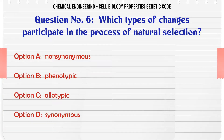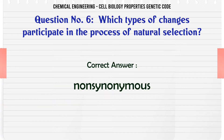Which types of changes participate in the process of natural selection? A) Non-Synonymous, B) Phenotypic, C) Allotypic, D) Synonymous. The correct answer is Non-Synonymous.